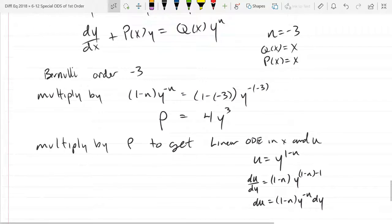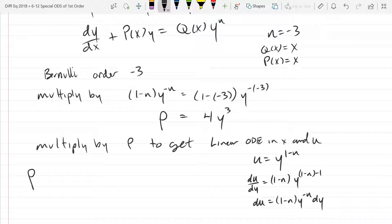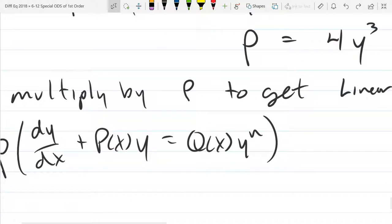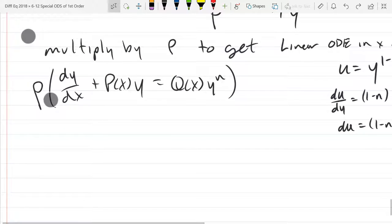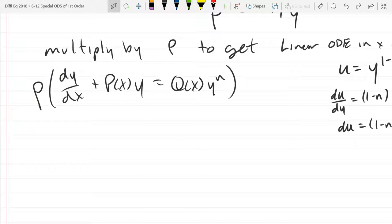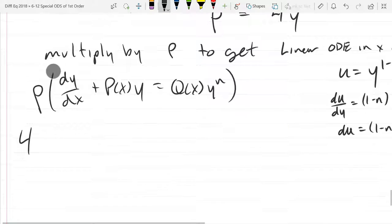So I'm going to take a y derivative. So we got 1 minus n, y to the 1 minus n minus 1. And again, I'm being extra explicit and careful so I don't make arithmetic mistakes. That will screw everything up. So multiply by dy and simplify that power. We just have 1 minus 1. It cancels. So du is this function times dy. Alright. So I've got my rho. So now we're going to multiply rho into the original.